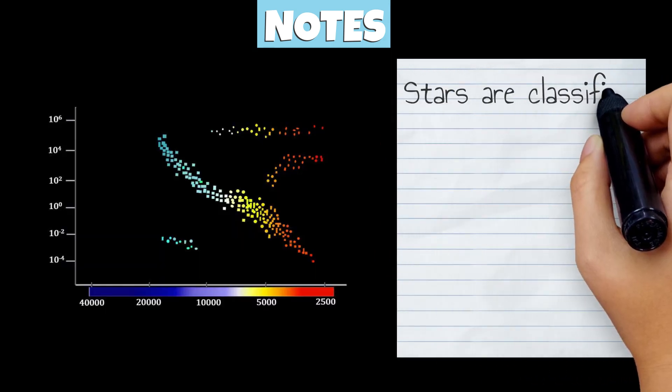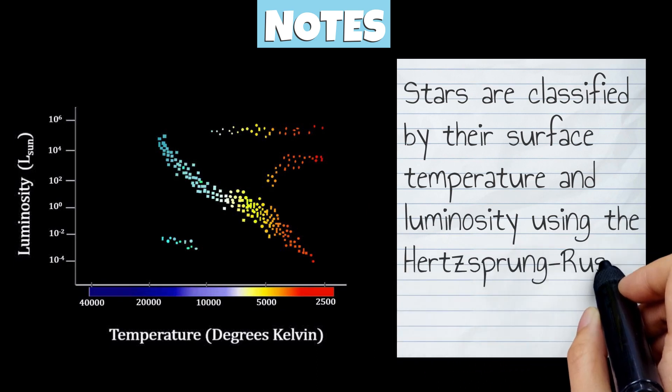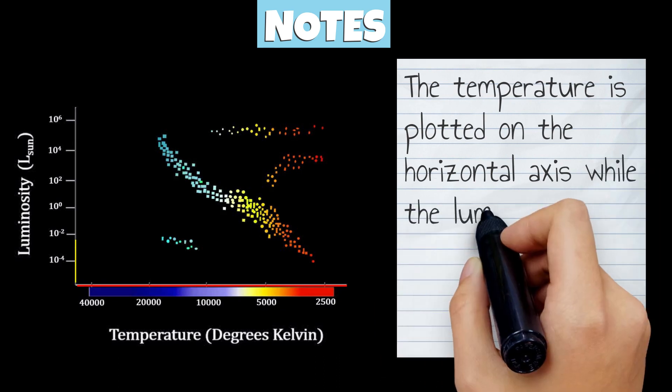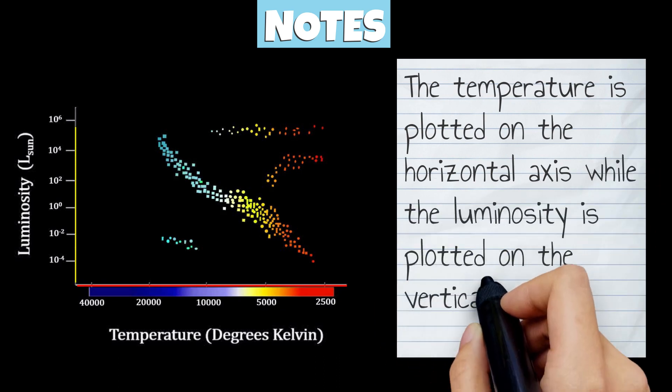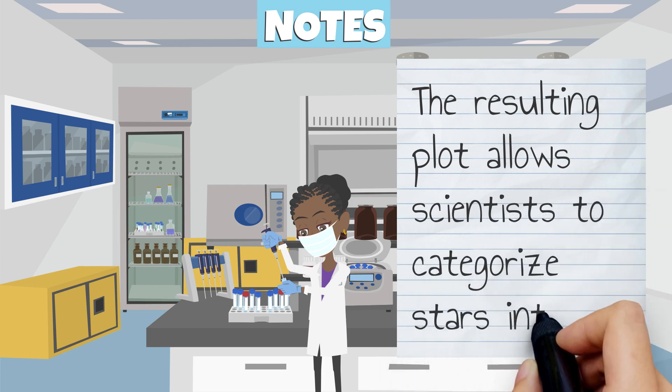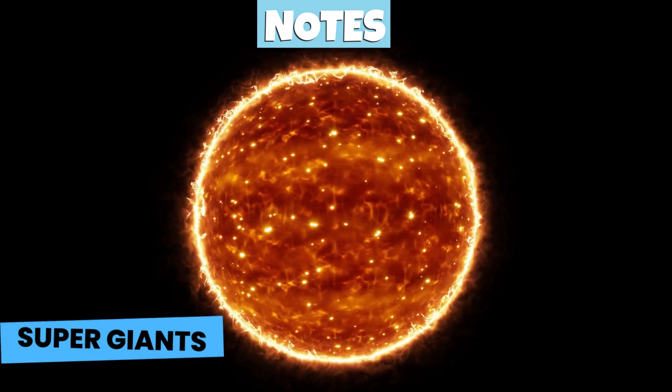Stars are classified by their surface temperature and luminosity using the Hertzsprung-Russell diagram. The temperature is plotted on the horizontal axis, while the luminosity is plotted on the vertical axis. The resulting plot allows scientists to categorize stars into main sequence stars, red giants, white dwarfs, and supergiants.